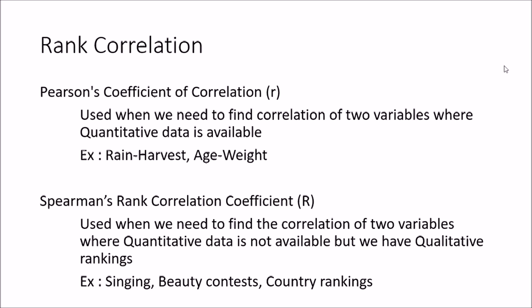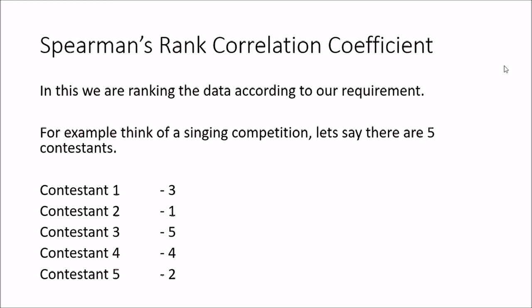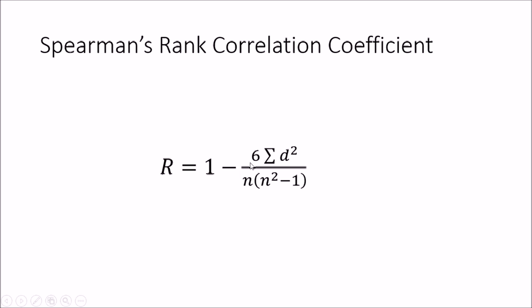Now let's look at how to calculate the Spearman's rank correlation coefficient. Say there's a singing competition with five contestants. A judge ranks them by singing ability: number one for the best singer, then number two, three, four, and five. The equation we use is: R equals one minus six times sigma d-squared, divided by n times (n-squared minus one), where d is the difference between ranks of each pair.